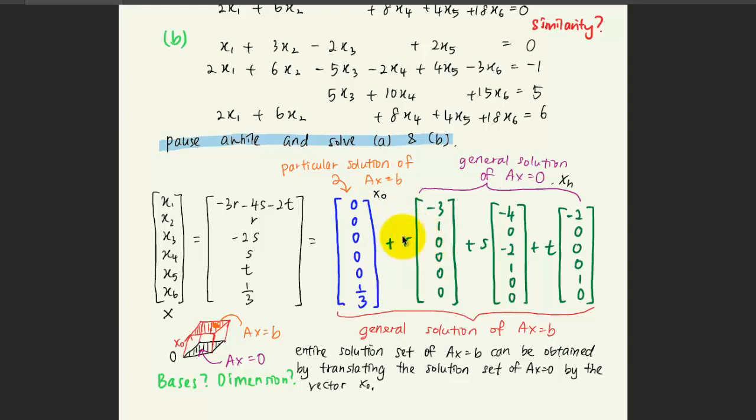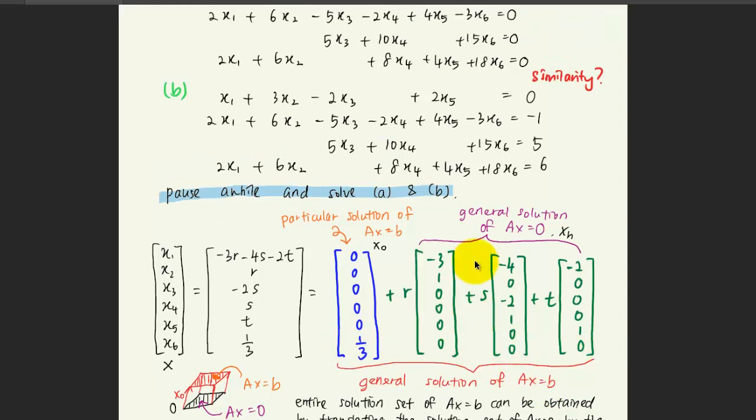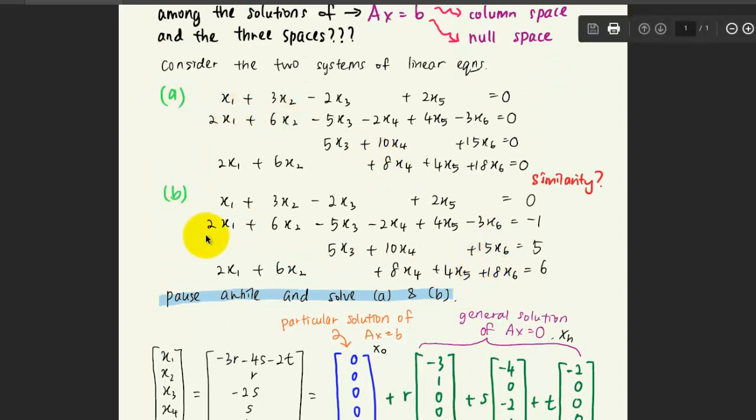And on the other hand, we have another three column vectors here: R, S, T, corresponding to the three free variables here. So these three column vectors are the general solution of Ax equals 0. We call it the homogeneous solutions here. So the combinations of these two, the x0, the particular solution, and the general solution of the homogeneous linear system is the general solution of Ax equals b. So you should have these kinds of solutions based on your calculation from the first case and the second case here.